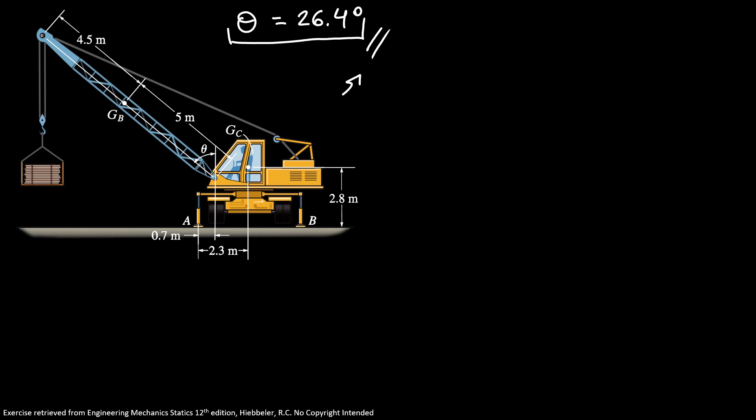And if we apply the sum of forces in y direction is equal 0, we're going to find our Na is equal 0.6 plus 5 plus 3. So the normal Na before I overturn is 8.6 megagrams.